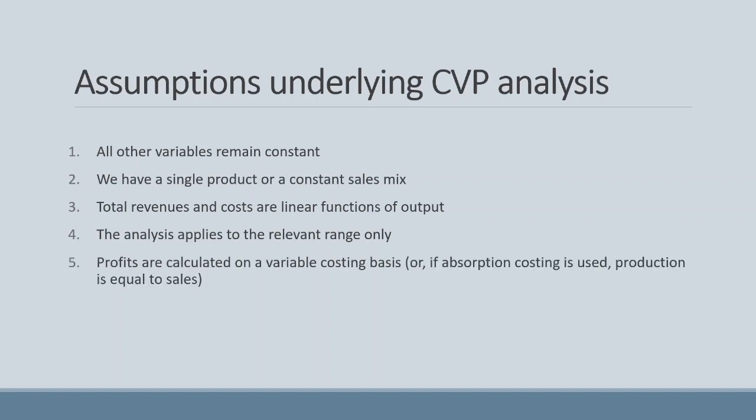Our fifth assumption is that we use a variable costing basis. Variable costing is generally considered superior for decision making. It also means that our profits are a function of sales only, which simplifies our analysis. Absorption costing can be used if we assume that production and sales are equal, or else we will need to incorporate the effect of changing production levels on our profits.